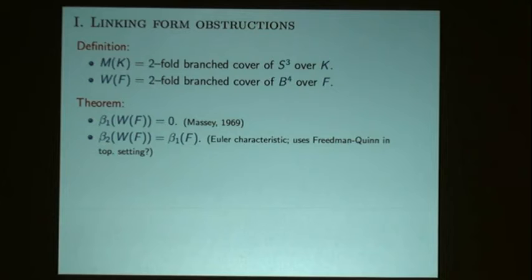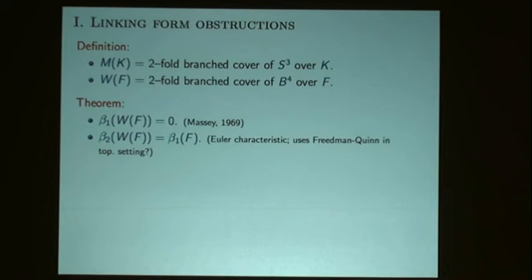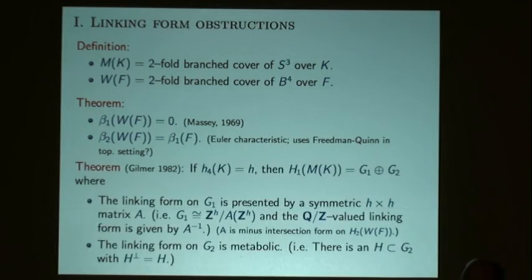In the orientable case, you usually prove this calling on the infinite cyclic cover. But Massey was the first to observe that in the non-orientable setting there was a way around that — the second Betti number follows from an Euler characteristic argument. As far as I can tell, if you aren't in the smooth setting and you're just working topologically, you have to call on Freedman-Quinn to get that result.